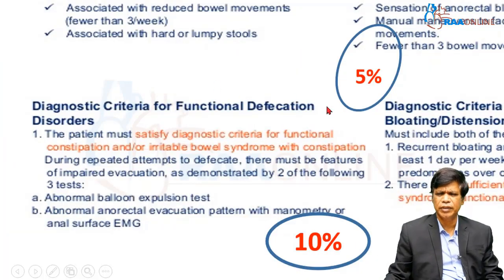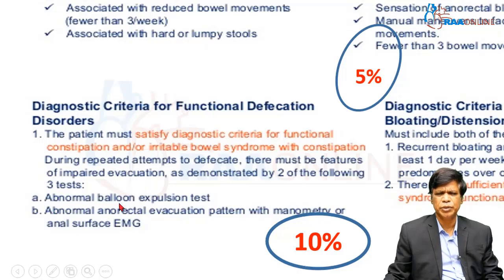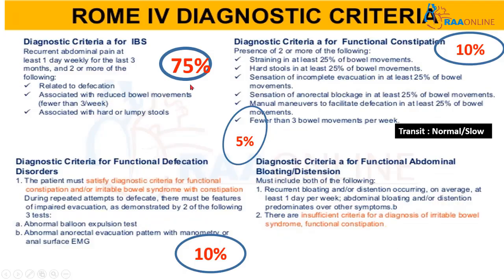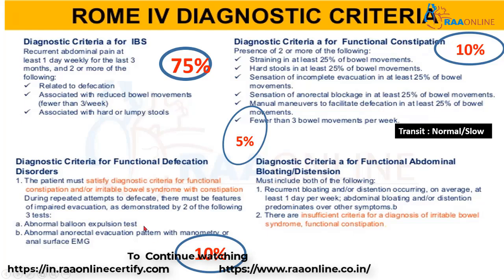If the defecation disorder is predominantly due to impaired evacuation, especially when anorectal dysfunction is found on evaluation, then we subclassify it as evacuation disorder. Of the functional bowel disorders presenting as constipation, 75% will be IBS constipation type, around 10% each will be normal or slow transit constipation and defecation disorder, and another 5% will be overlap.